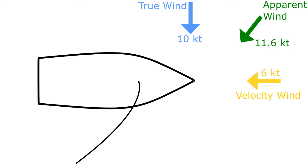The additive nature of true wind and velocity wind is what allows high-performance boats such as skiffs or America's Cup catamarans to sail at speeds greater than the true wind speed — they are actually sailing in a very fast apparent wind. This is also what makes running so slow. On a run we have true wind blowing from behind us, but it is cancelled out by the velocity wind blowing from in front. The result is a combined wind with a strength less than both the true wind and velocity wind.